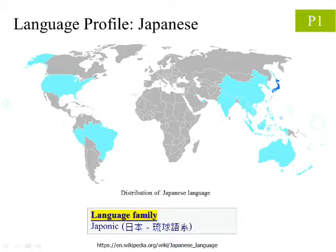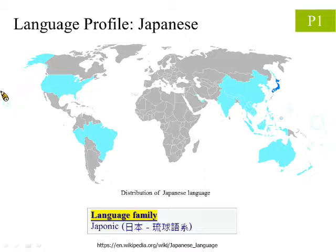Before we start, let us first briefly introduce the Japanese language. The users of the language are mostly located in Japan. The area marked in dark blue is the country Japan, and in light blue are the areas where Japanese is an important minority language. The following is its language family. We can see that Japanese is quite special, forming an entire language family by itself.